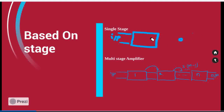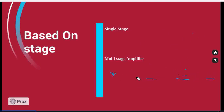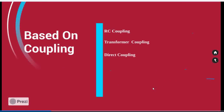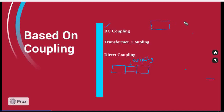Now we are moving towards the classification of amplifiers based on coupling. Multi-stage amplifiers connect stages side by side, with one stage's output as the input to the next stage. While connecting the stages, we use coupling elements, and based on these coupling elements we make the classification of amplifiers. The first one is the RC coupled amplifier — in the RC coupled amplifier, two stages are connected using a capacitive element, known as the coupling capacitor.